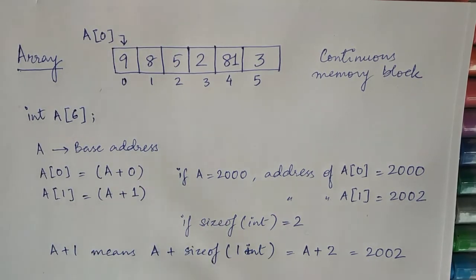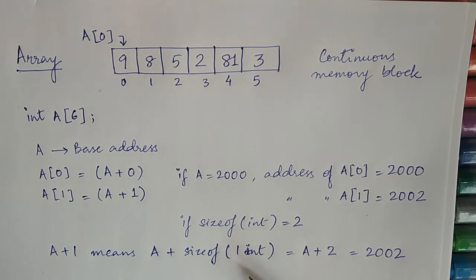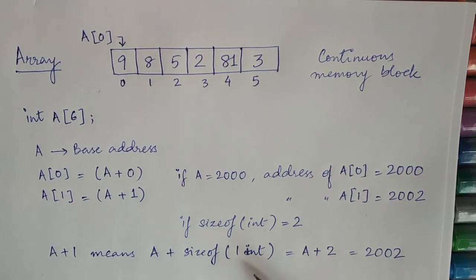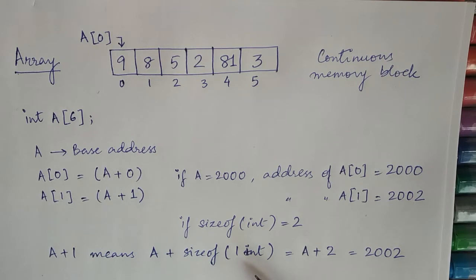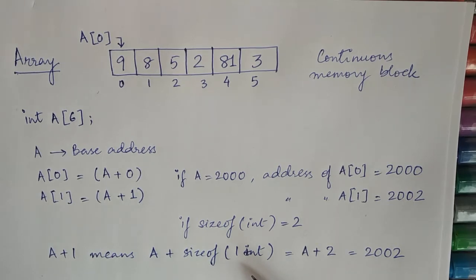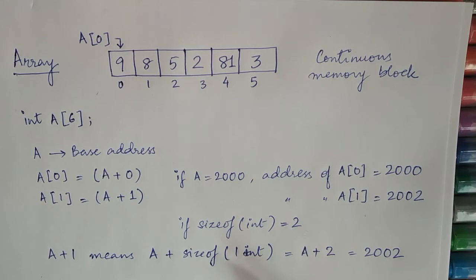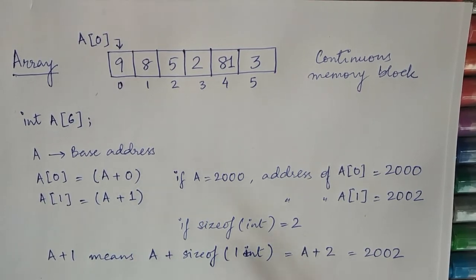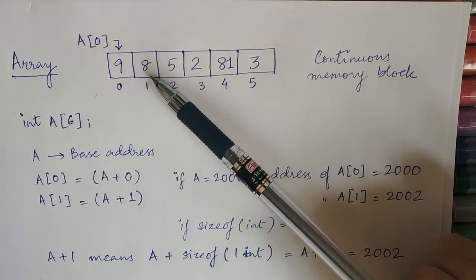So 2000 plus 1 does not mean 1 as such the number 1. It means one location, one integer location and the size of int in your system. Sometimes it is 2 bytes, sometimes it is 4 bytes. We will go with the notion that the size of int in our compiler is 2. So base address plus 2, 2002 would be the address of the element 8.